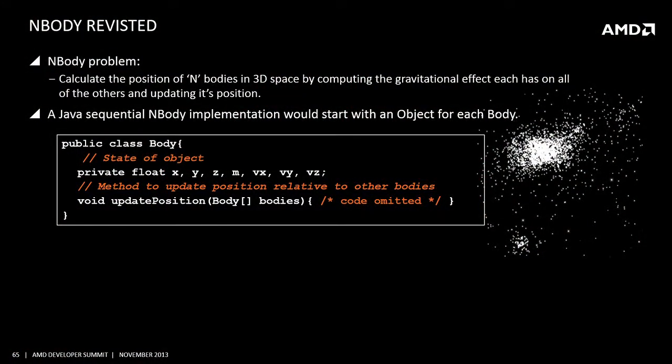Java 8 starts to solve that problem. To illustrate, we'll look at the N-body problem — calculating the position of multiple bodies in 3D space by checking the gravitational effect each has on the others. A Java developer writing this sequentially would write a Body class object, put state in there, and have a method calculating its position relative to all others — standard object-oriented programming. But with JoCL or JCUDA, we couldn't do this: we had to take state out of objects and put it into primitive arrays, immediately putting the Java developer in an alien environment.